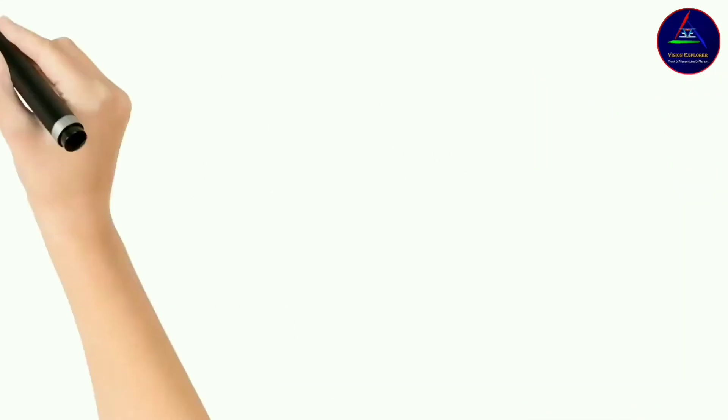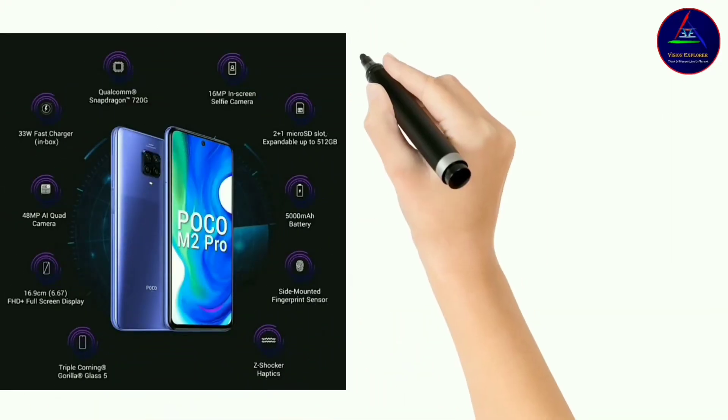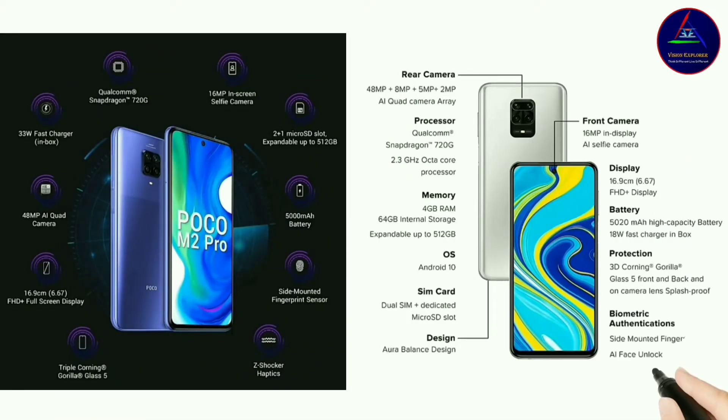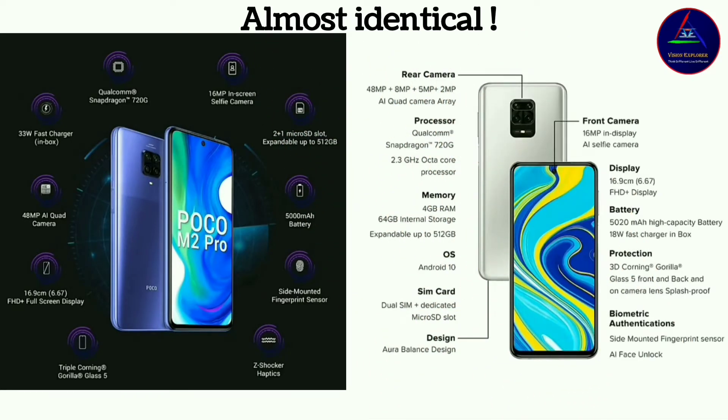Like in recent times, there were two phones, Redmi Note 9 Pro and Poco M2 Pro. Both were identical in most of the features, and both of them have same parent company. Sometimes subbrands only do rebranding, just to increase the level of competition.